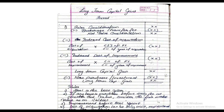After subtracting indexed cost of acquisition, the next step is less indexed cost of improvement. Again, the formula is similar: cost of improvement multiplied by CII of the previous year, divided by CII of the year of improvement. Improvement means if you are doing any renovation on your property, so you can claim some deduction on the value of your sale. When you subtract both indexed costs from net sale consideration, you get your first answer called long-term capital gain. And if there is any new purchase or investment made, we subtract that also, and the final answer will be termed as long-term capital gain.